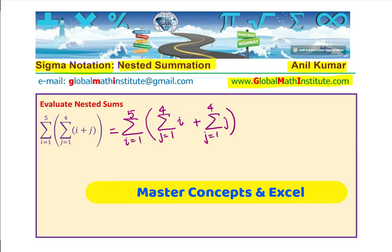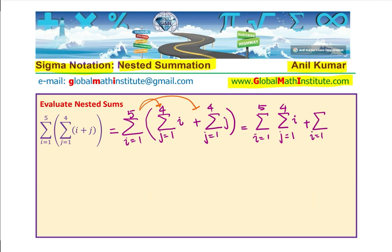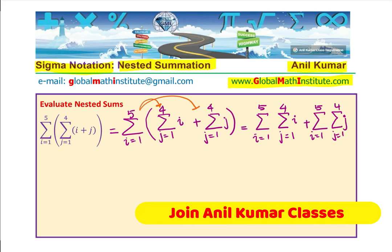Now you could actually open this bracket and do them individually using the distributive property. So we get sigma i from 1 to 5 of sigma of i where j changes from 1 to 4, plus sigma i from 1 to 5 of sigma j where j changes from 1 to 4. That becomes the form after we open this bracket.